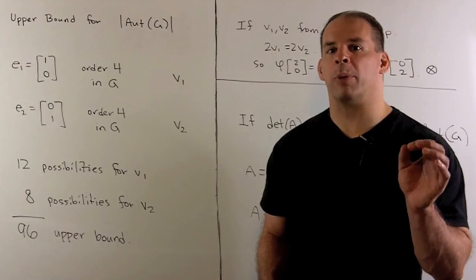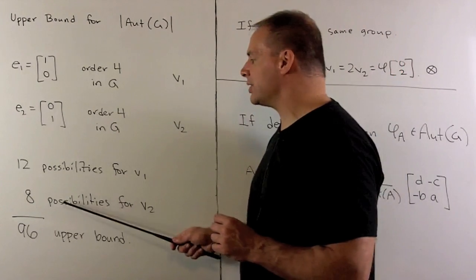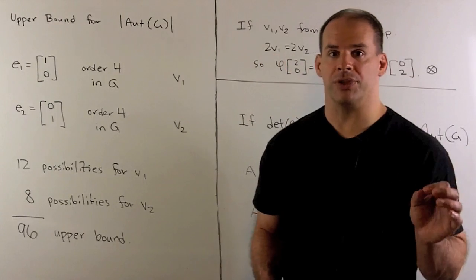Note, this is just an upper bound because there's no guarantee if we choose like this that we actually get an automorphism.